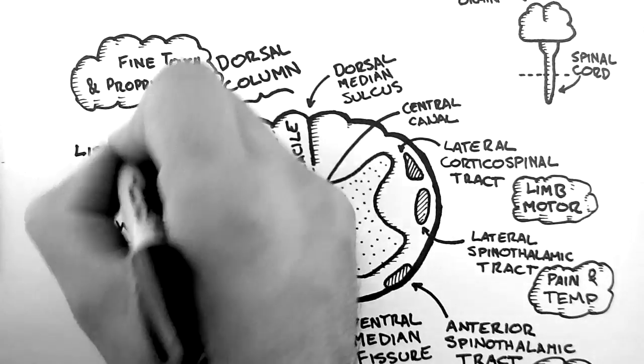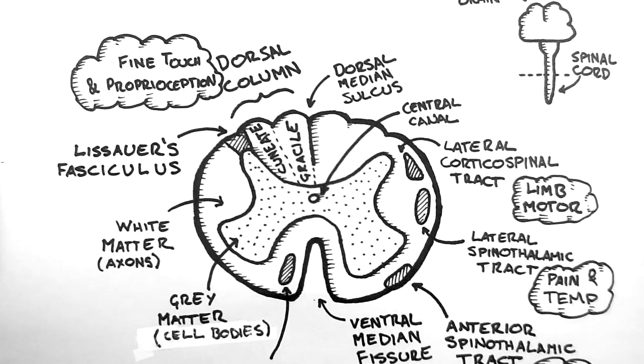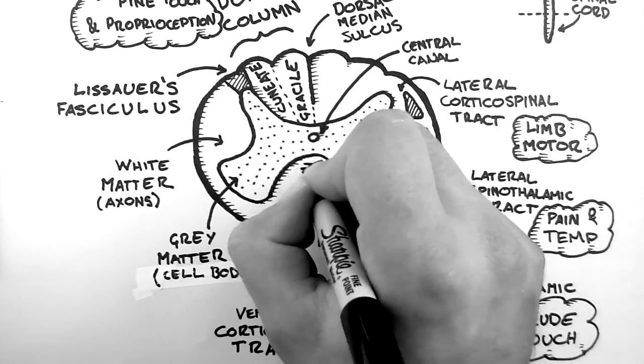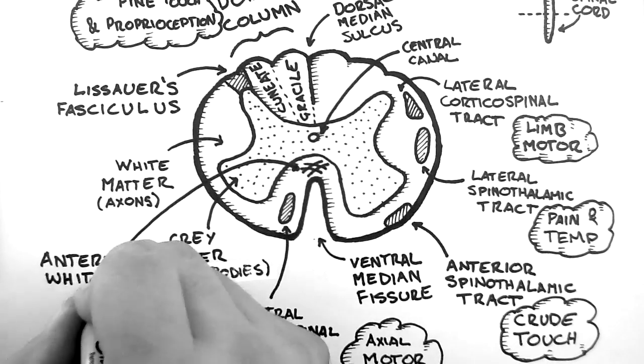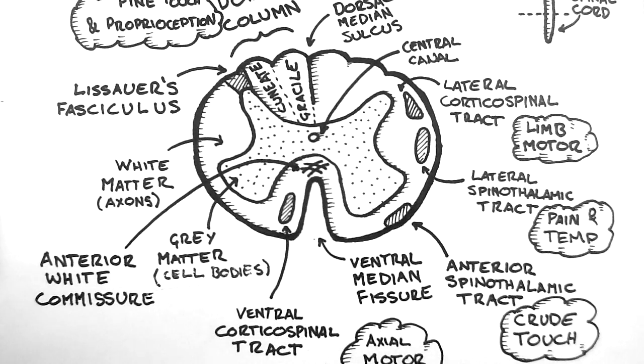Up here we have Lissauer's fasciculus, and we'll see what that does in the spinothalamic tract tutorial. And finally here, we have a decussation of tracts, known as the anterior white commissure. A decussation is where axons cross from the left side of the body to the right, or vice versa.